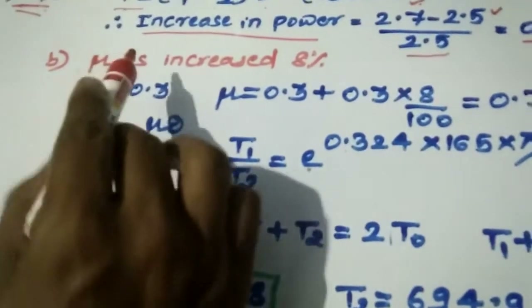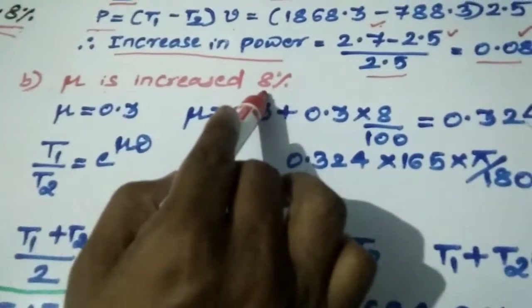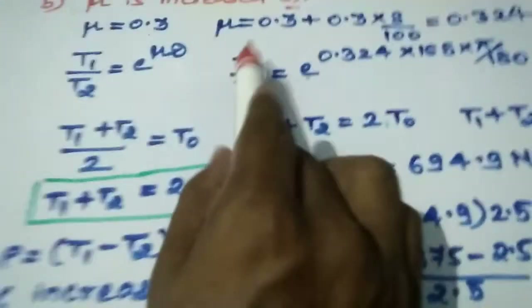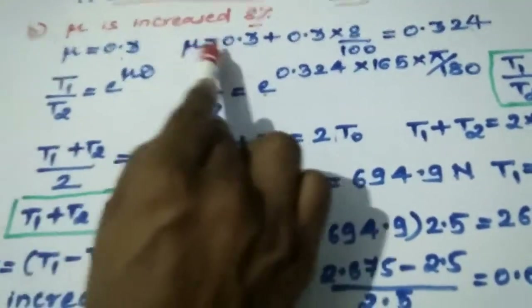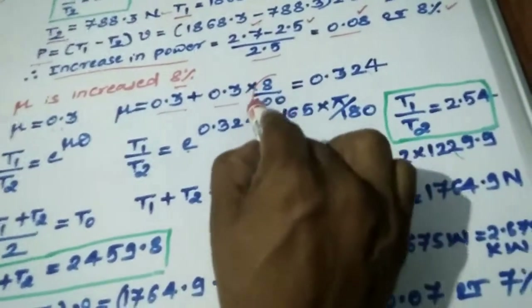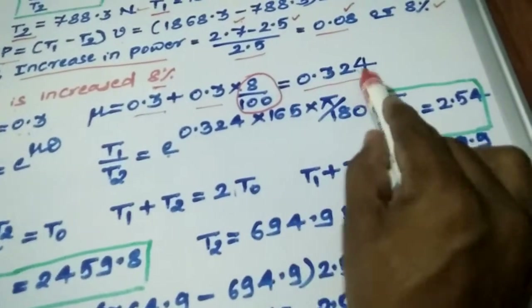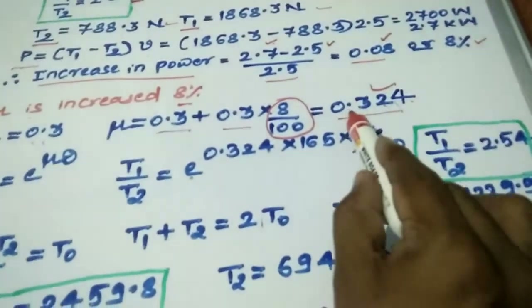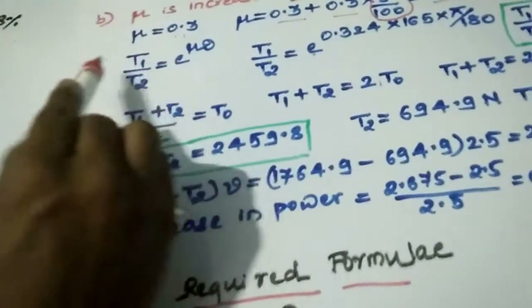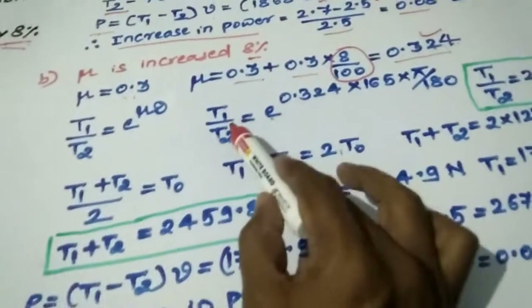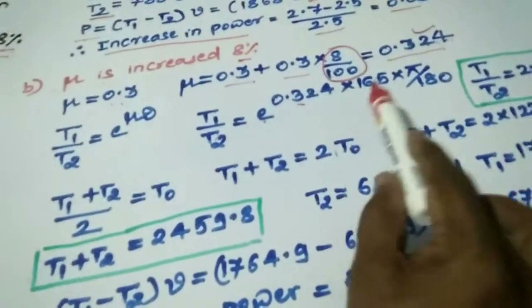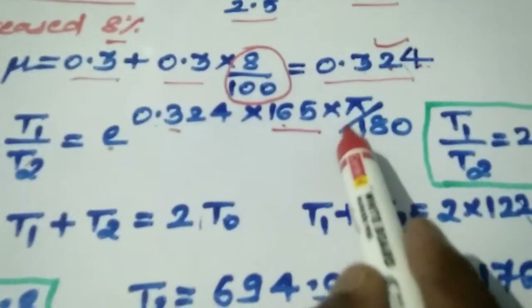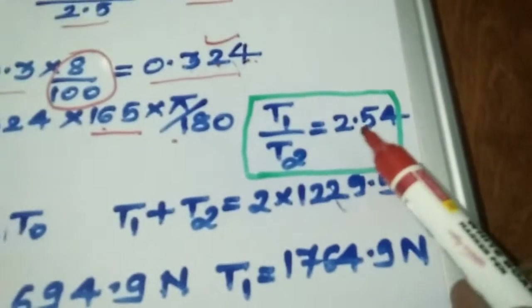For Case B: the coefficient of friction is increased by 8%. The initial mu is 0.3. Increasing by 8% gives new mu equal to 0.3 plus 8% of 0.3, which comes as 0.324. Using T1 by T2 equal to e raised to mu theta, with new mu equal to 0.324 and theta equal to 165 degrees converted to radians, we get T1 by T2 equal to 2.54.